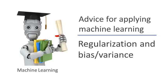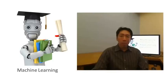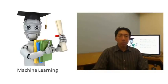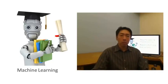You've seen how regularization can help prevent overfitting. But how does it affect the bias and variance of a learning algorithm? I'd like to go deeper into the issue of bias and variance and talk about how it interacts with and is affected by the regularization of your learning algorithm.